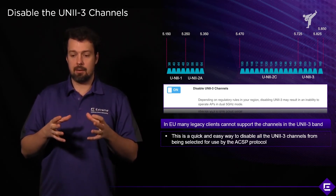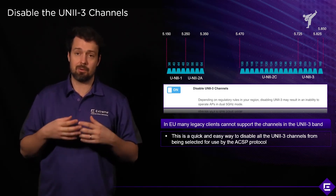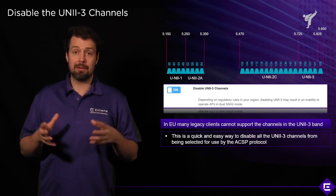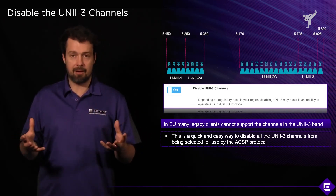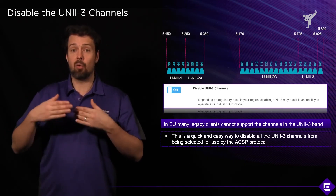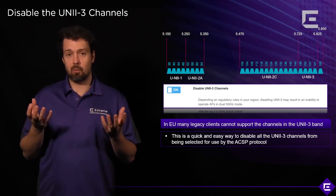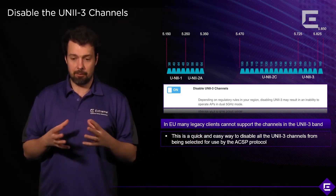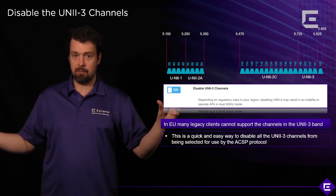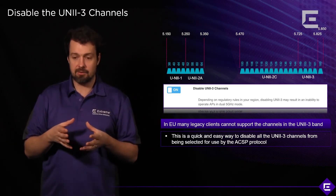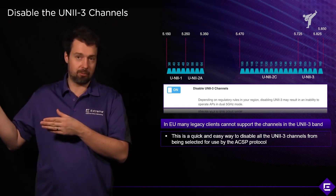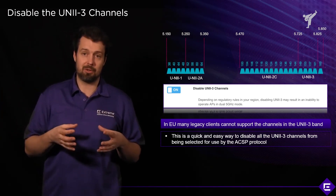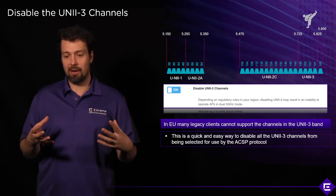UNII-3 in North America has been around for quite a while, so all client devices already know about that channel plan. In the European Union, UNII-3 has only been released very recently, and a client device that hasn't had its firmware upgraded for a long time might not be aware those channels are available. As a result, clients may not see the channels the access points are using, causing holes in your coverage. In some cases it's actually better to disable UNII-3 channels in EMEA, even though having those additional four channels is nice.